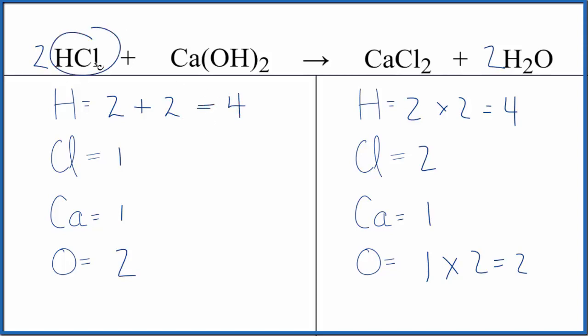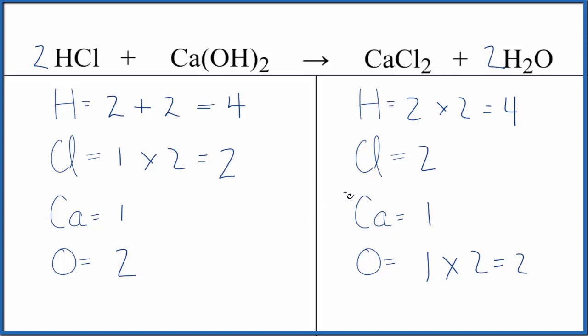The two goes to everything, so one times two for the chlorine gives us two. We're done — this equation is balanced. You probably could have also started with the chlorines; that would have worked as well.